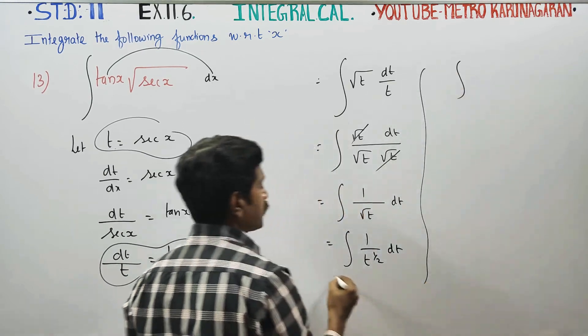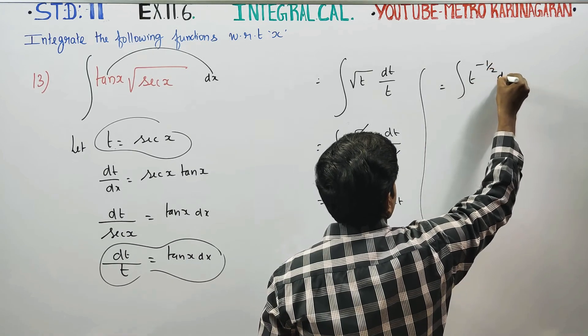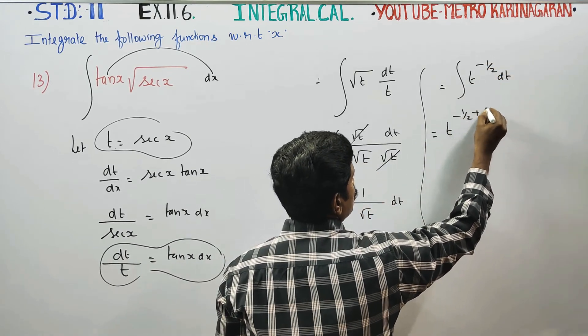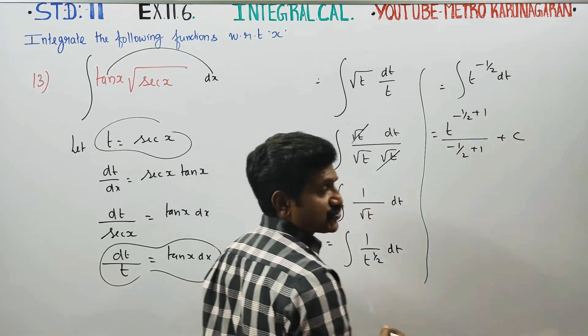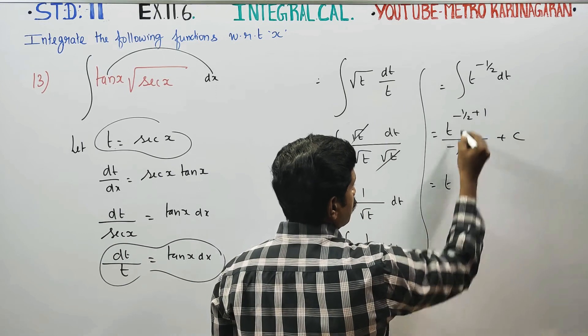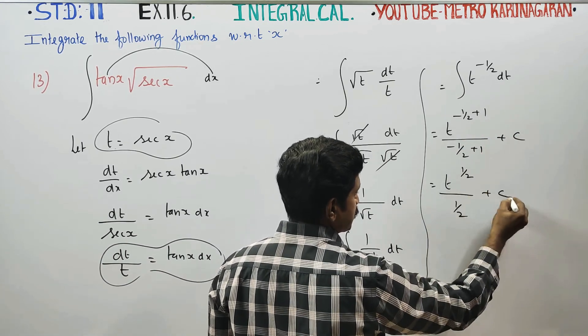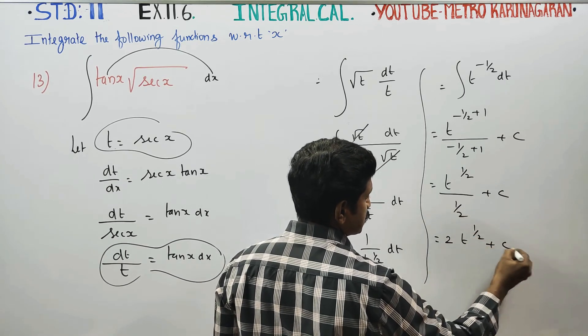So integration of t power minus half dt. Integration formula, minus half plus 1 by minus half plus 1 plus c. That gives you half, so reciprocal, 2 into t power half plus c.